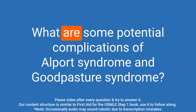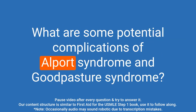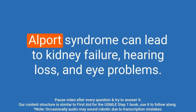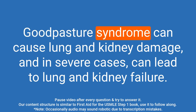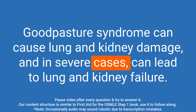Question: What are some potential complications of Alport syndrome and Goodpasture syndrome? Answer: Alport syndrome can lead to kidney failure, hearing loss, and eye problems. Goodpasture syndrome can cause lung and kidney damage and in severe cases can lead to lung and kidney failure.